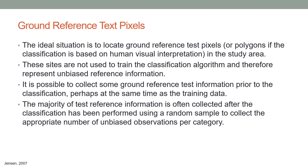The points used to train the classification algorithm must be separate from the points used to test the efficacy of the classification. It is possible to collect some ground reference test information prior to or at the same time as the training data. However, the majority of test reference information is often collected after the classification has been performed, using a random sample to collect the appropriate number of unbiased observations per category or class.